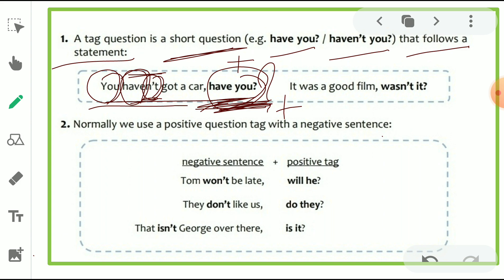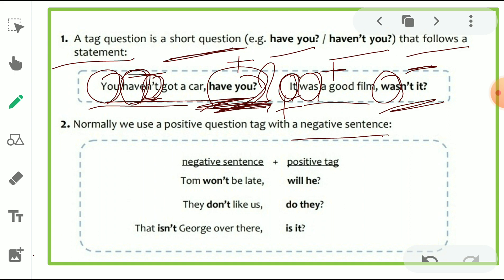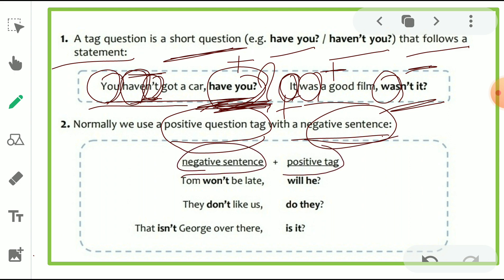Similarly, the second sentence: 'It was a good film.' Here 'was' is the helping verb and 'it' is the pronoun. The sentence is positive, so we add a negative to the helping verb 'was' and write it with the pronoun — 'wasn't it?' Normally, we use a positive question tag with a negative sentence, and a negative tag with a positive sentence. For example: 'Tom won't be late, will he?' Here 'won't' is 'will' plus 'not,' so the tag is positive — 'will he?'